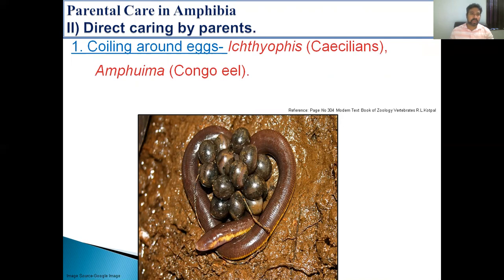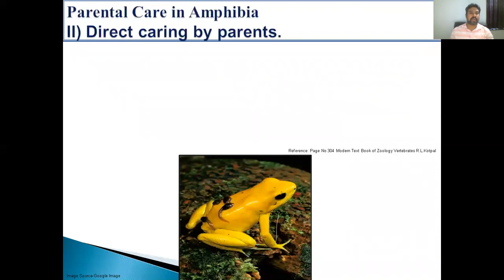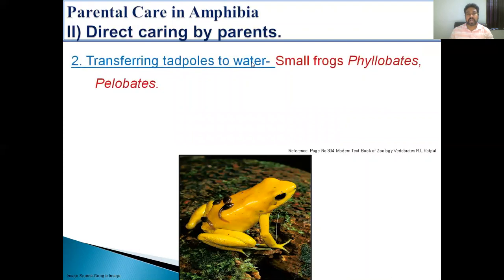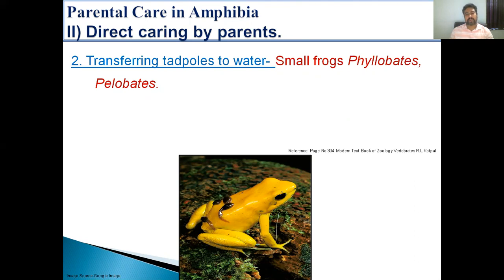The next way of direct caring by parents is transferring tadpoles to water, which is shown by small frogs like Phyllobates and Pelobates. In this case, the hatched tadpoles fasten onto the back of the parent by their sucker mouth, and the parent transfers the tadpoles to the water.